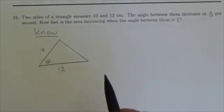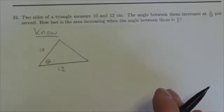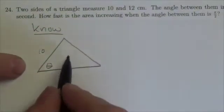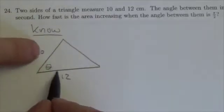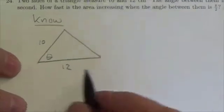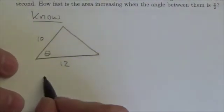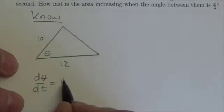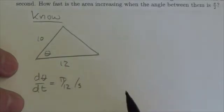The two sides here are constant. They aren't changing in time at all. What is changing is the length of that side right there and the angle between them. The angle between them is increasing, so dθ/dt is increasing at π/12 radians per second.